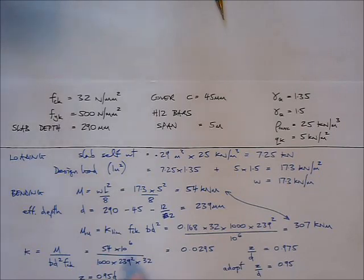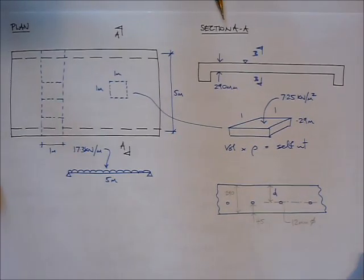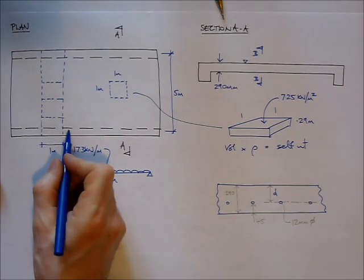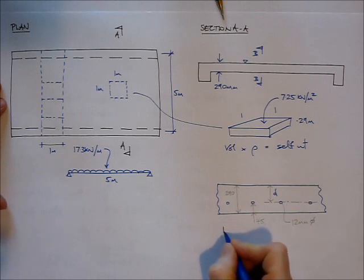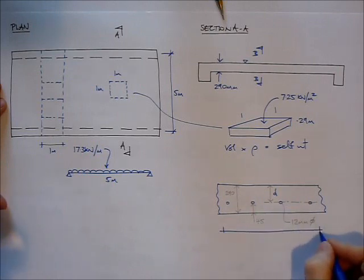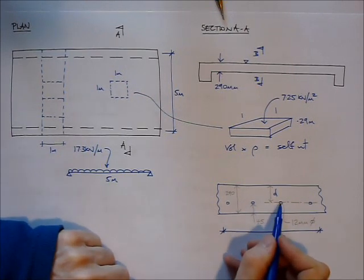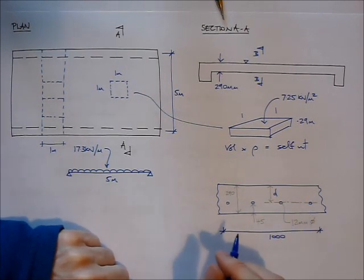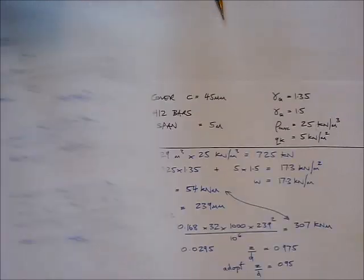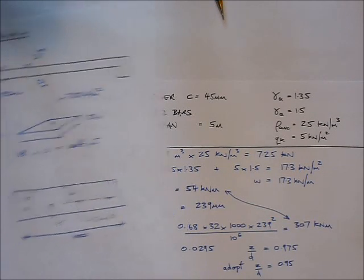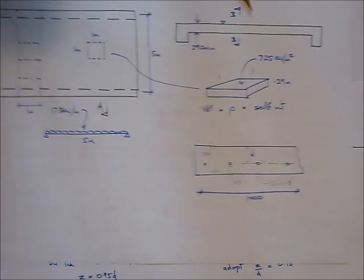So for every meter width of this slab, the amount of steel in the bottom of the slab must be at least 547 square millimeters.